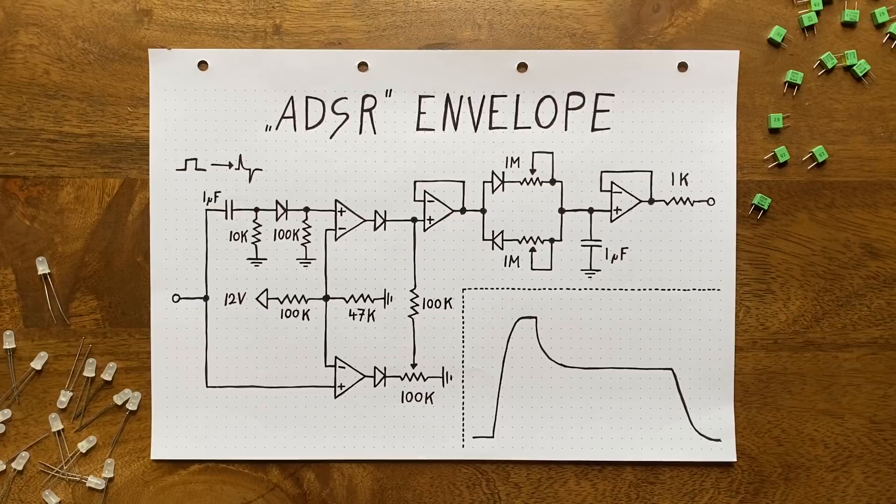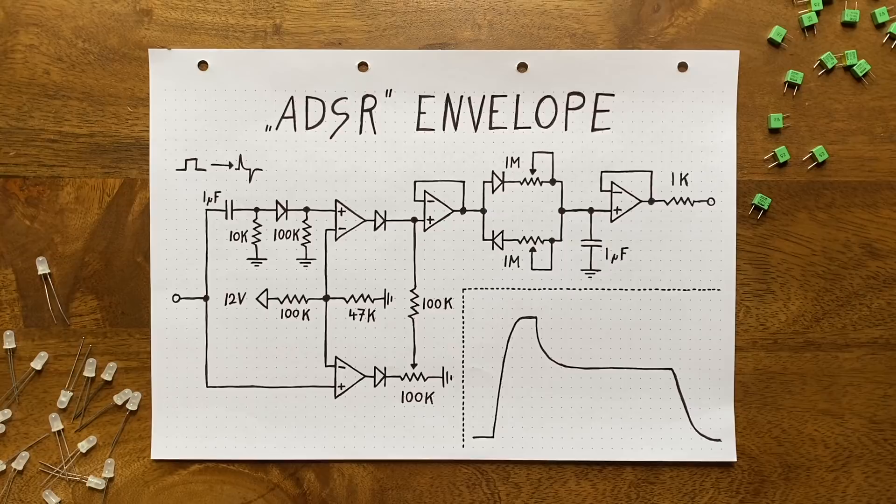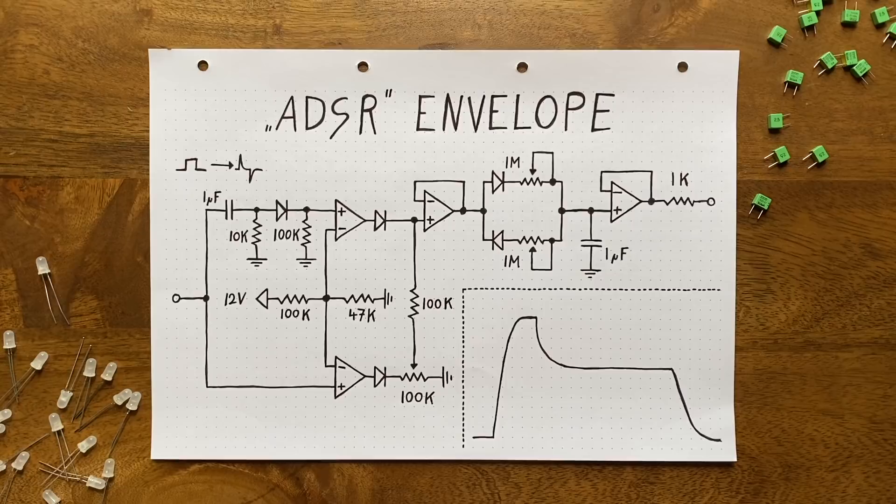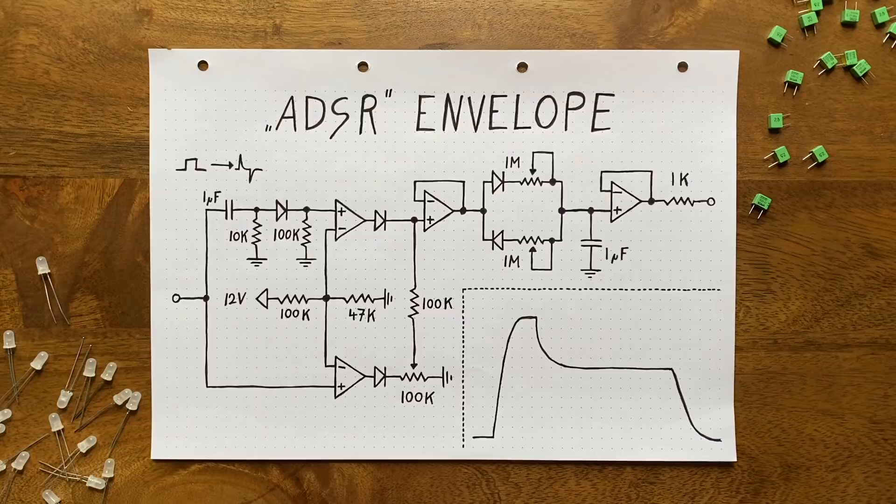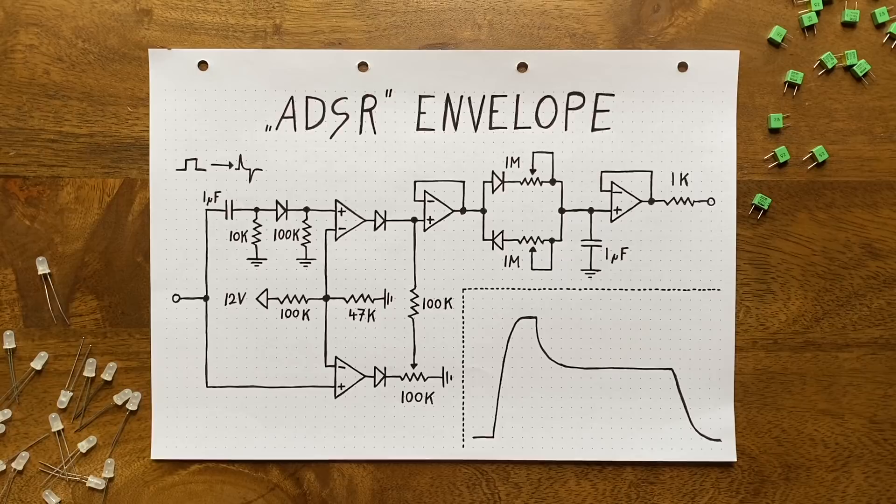First, a positive one when the input transitions from low to high, and then a negative one when it drops from high to low. Now since we're not interested in the negative spike and it could cause our comparator to glitch out under certain circumstances, I've decided to block it with another diode-100k resistor combination. Okay, but what do we need the positive one for? Simple. By feeding this positive spike into our comparator, we get a quick 12 volts burst right when the envelope is triggered.